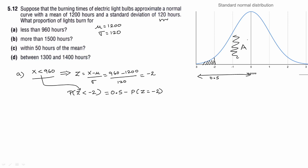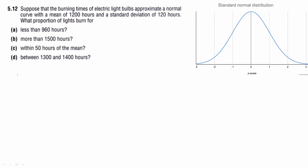The area is in the table. Looking up the value in the table, we get 0.4772. So the simplified answer is 0.0228. This is the proportion of lights that burn for less than 960 hours.